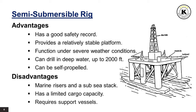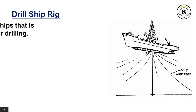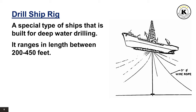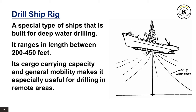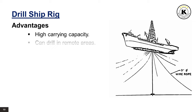The drill ship is a special type of ship built for deep water drilling, ranging in length between 200 to 450 feet. Its cargo carrying capacity and general mobility make it especially useful for drilling in remote areas. Advantages: it has high carrying capacity, it can drill in remote areas, it can operate in deep water, and it is self-propelled.